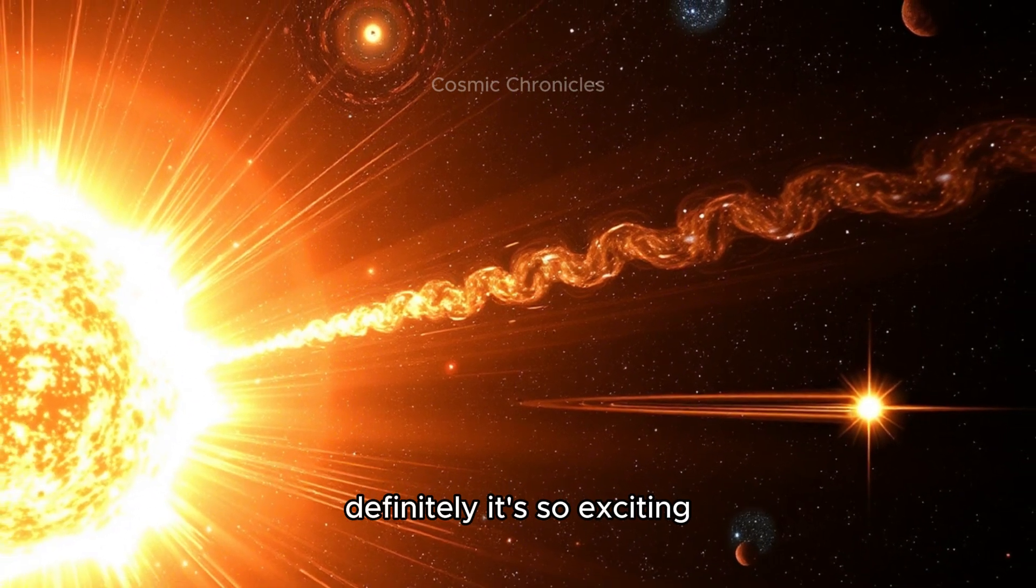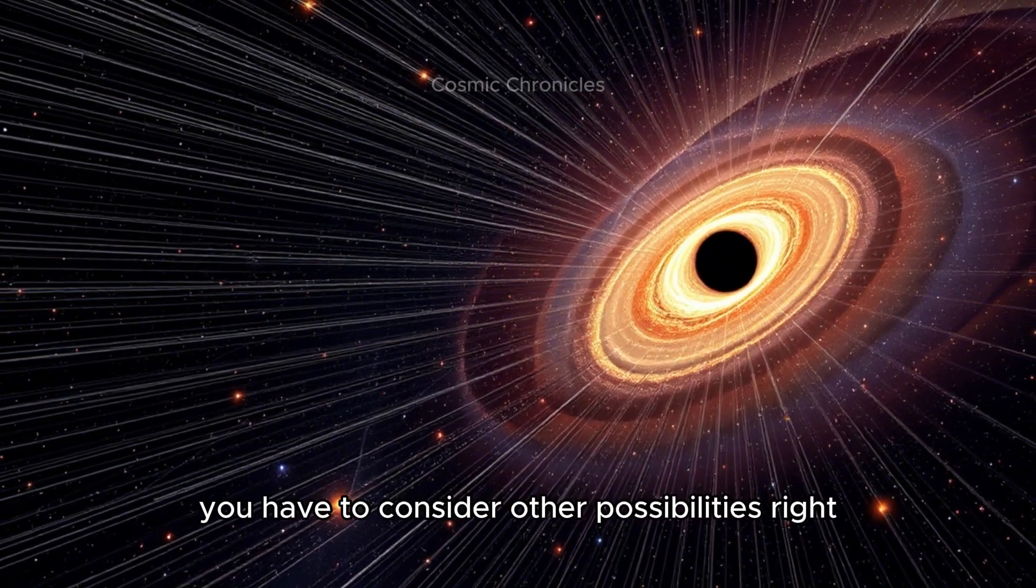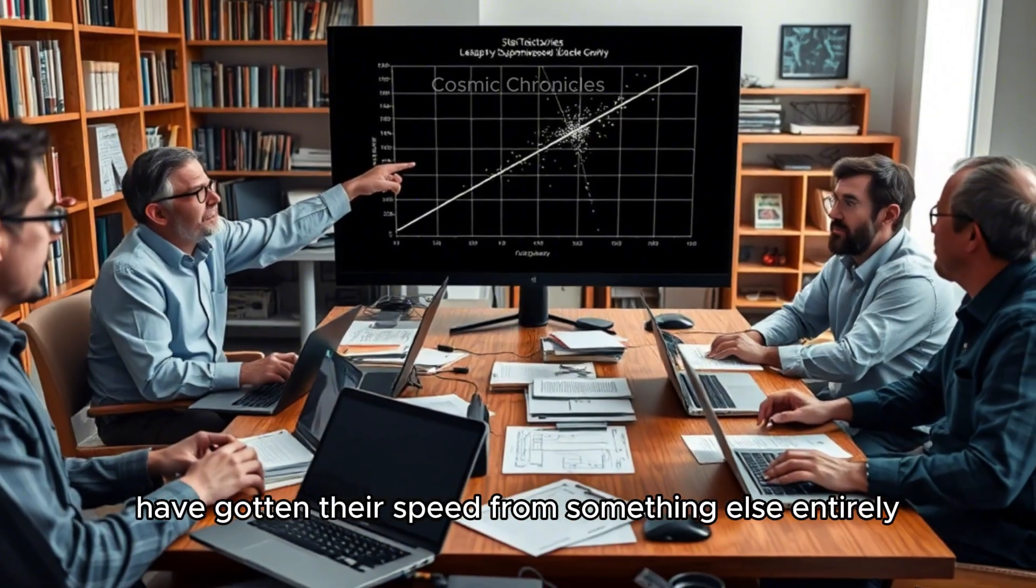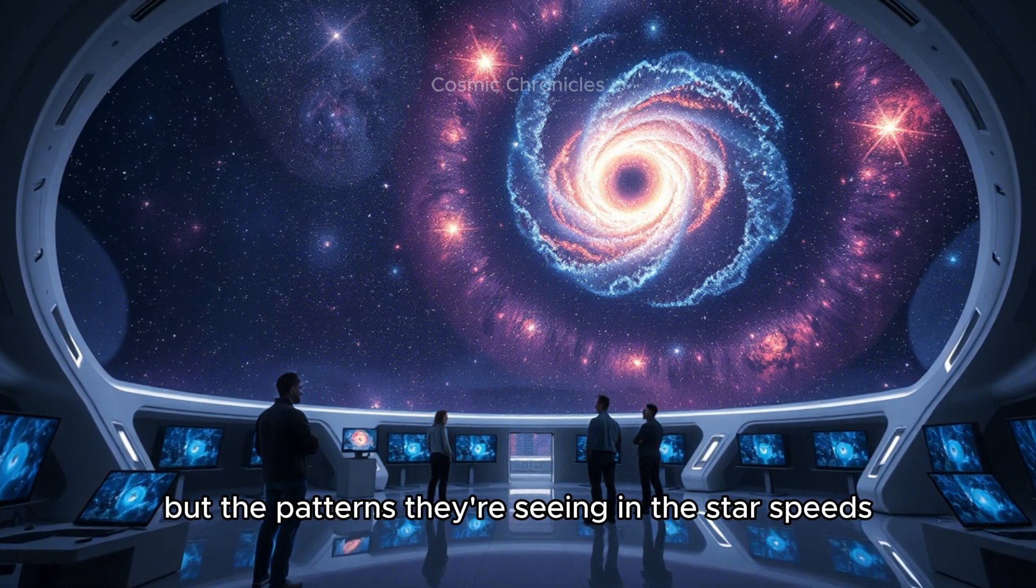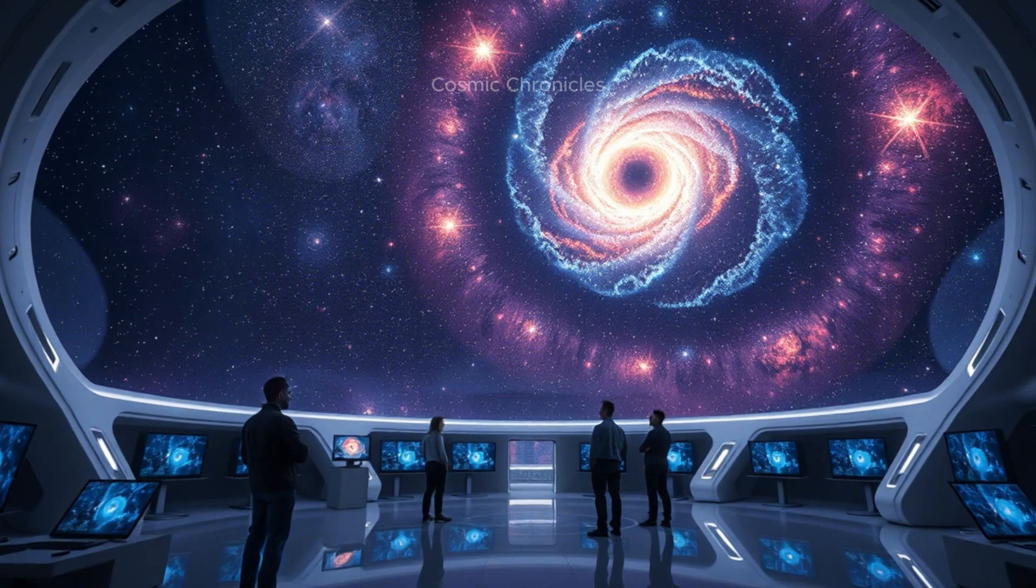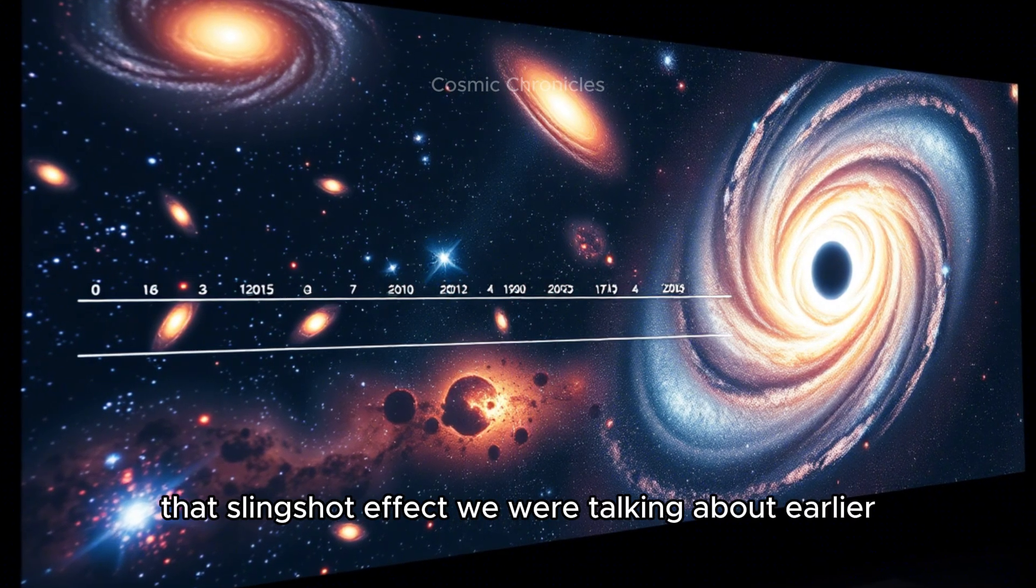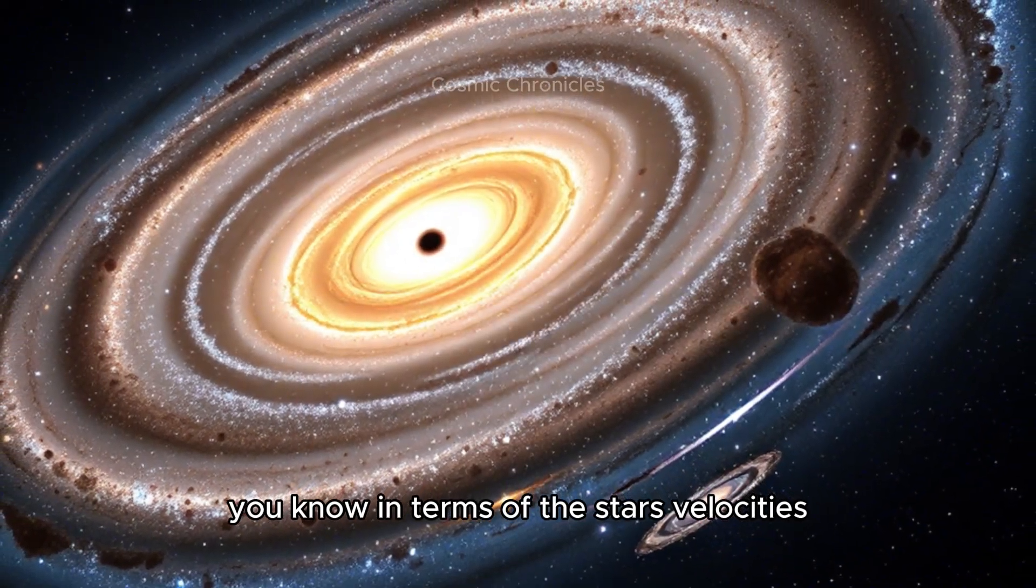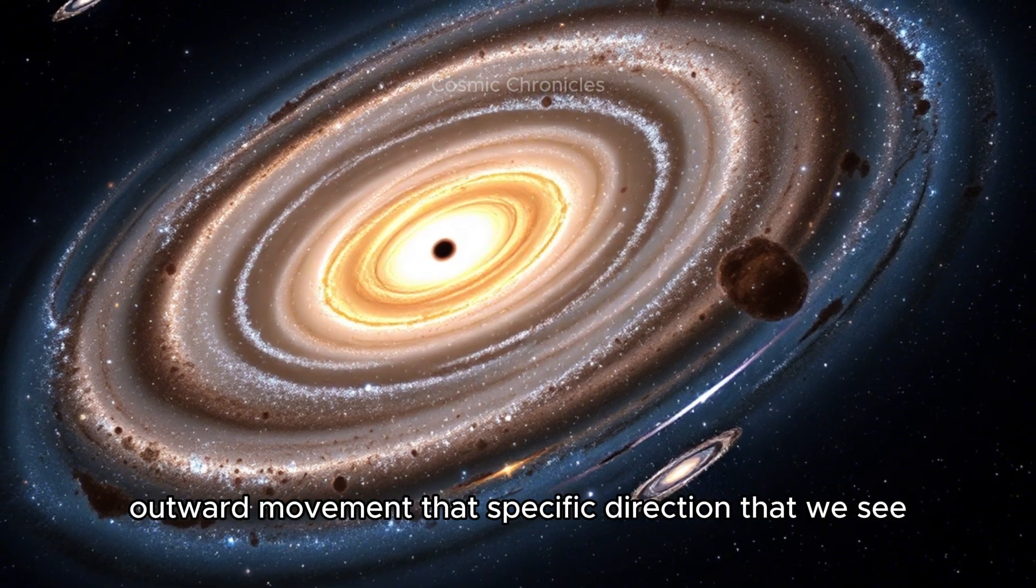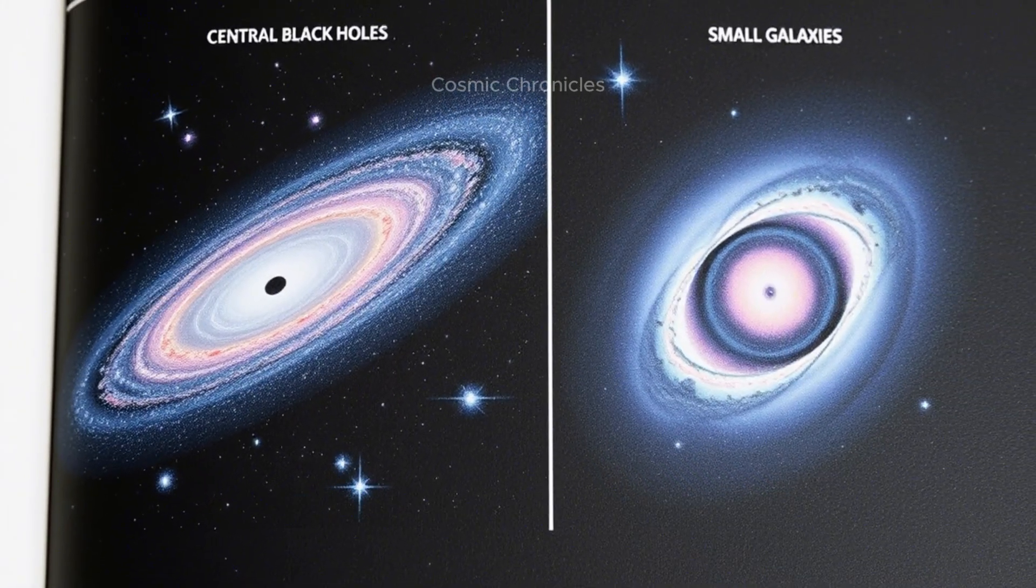Every time you have a claim this big, this groundbreaking, you have to consider other possibilities. Could these super fast stars have gotten their speed from something else, like a really powerful supernova explosion? That's a great point, and researchers have definitely looked into those alternative explanations. But the patterns they're seeing in the star speeds and the direction they're traveling really support the idea that they got their kick from interacting with a supermassive black hole. Supernovae, while incredibly powerful, tend to leave behind a different kind of pattern in terms of the star's velocities, and they probably wouldn't create that same focused outward movement that we see pointing back to the LMC.